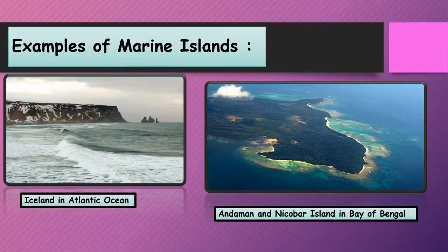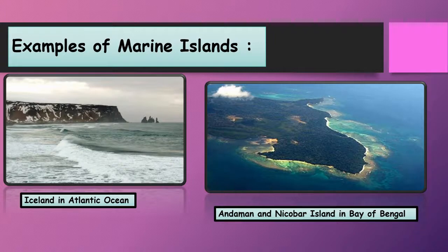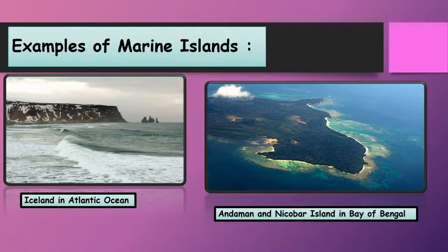Here we have examples of marine islands. The first is Iceland in the Atlantic Ocean. Iceland lies in the North Atlantic Ocean, east of Greenland and north of the United Kingdom, also touching the Arctic Circle. Iceland is one of the most volcanic regions in the world, with more than 13% covered by snow fields and glaciers, and most people live in the 7% of fertile coastland. The second example is the Andaman-Nicobar Islands in the Bay of Bengal, which have a diversity of flora and fauna. These islands lie close to the equator, experience an equatorial type of climate, and have a thick forest cover.